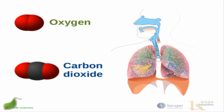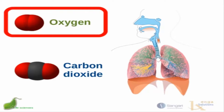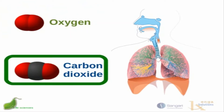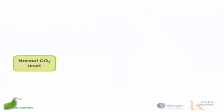We might think that oxygen is the molecule that is regulated in the blood and that it controls our breathing rate and heart rate, but in fact that is not true. It is carbon dioxide that, when dissolved in the blood, controls all aspects of our homeostatic mechanism with respect to gaseous exchange.